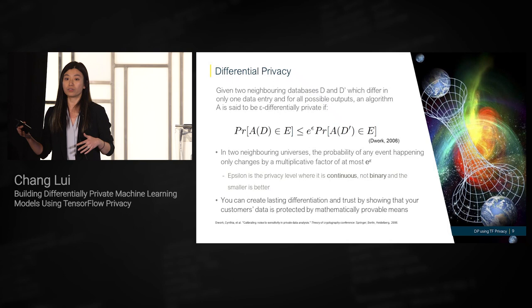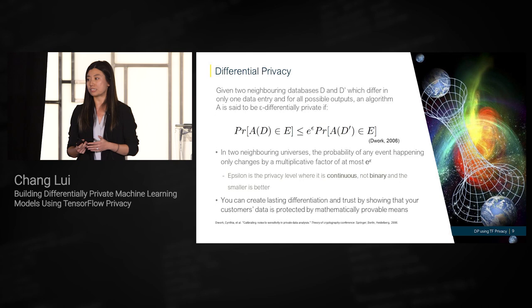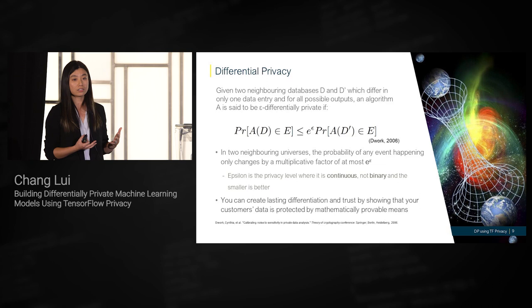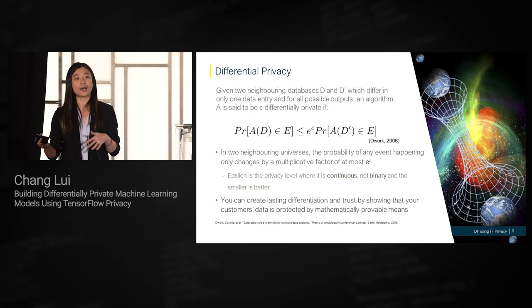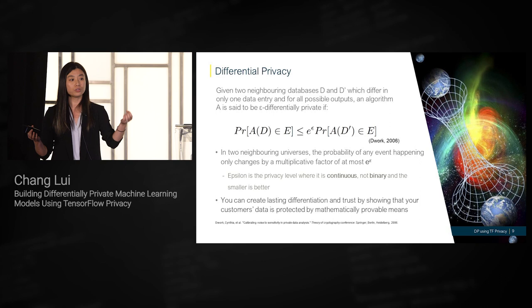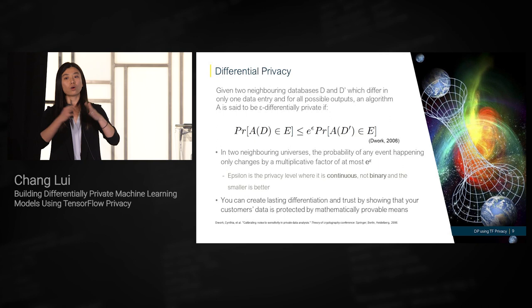This exercise is called randomized response, and it has existed for half a century in the marketing literature. From this, Cynthia Dwork and other researchers coined the term differential privacy. Inspired by randomized response, differential privacy is defined as follows: given two neighboring datasets D and D-prime, with only one record or one user differing between them, and any randomized algorithm, the outcome or probability of any event when applying the algorithm to D should not change much when applied to D-prime. Whether you participated in the training dataset or not, the outcome should not change much — you can claim your participation made no difference.